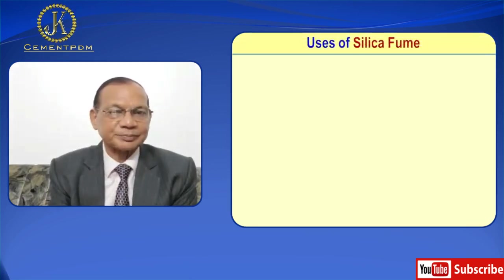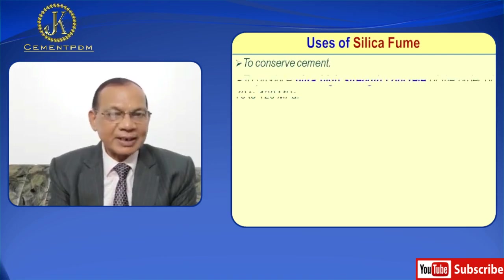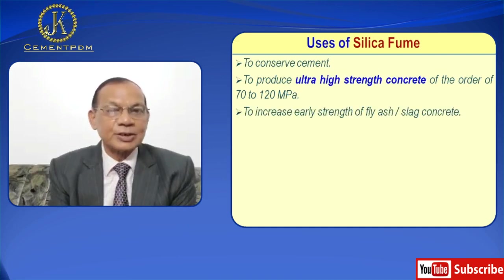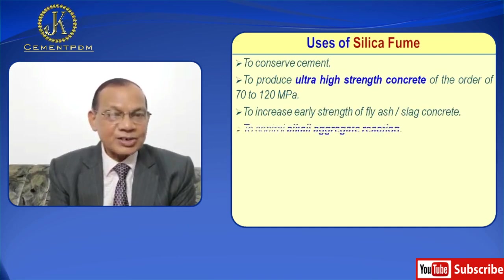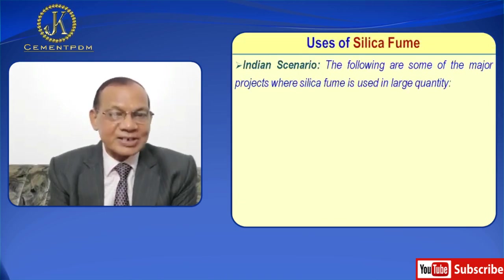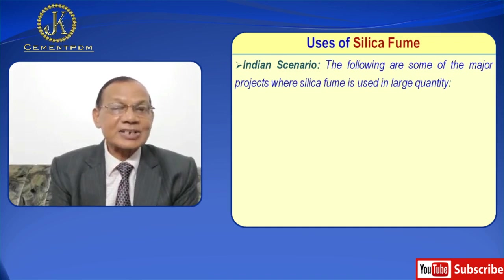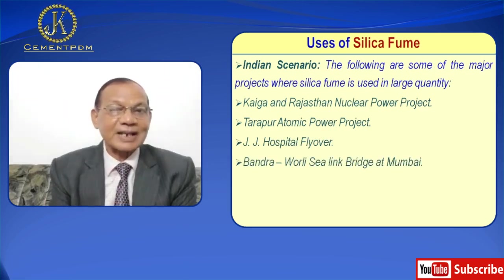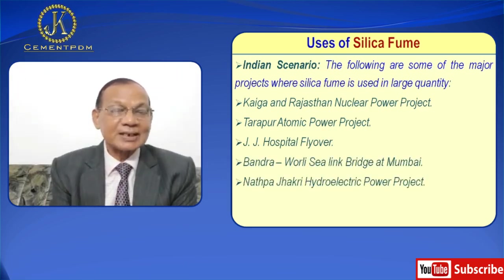Uses of silica fume: to conserve cement, to produce ultra high strength concrete of the order of 70 to 120 MPa, to increase early strength of fly ash or slag concrete, to control alkali-aggregate reaction, and to reduce sulfate attack and chloride-associated corrosion. India scenario — the following are some major projects where silica fume has been used: Kaiga and Rajasthan nuclear power project, Tarapur atomic power project, JJ Hospital flyover, Bandra-Worli sea link at Mumbai, Nathpa Jhakri hydroelectric power project.